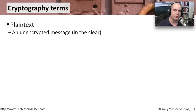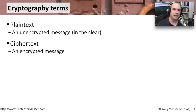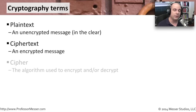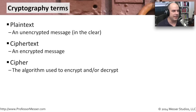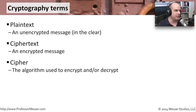Once we do encrypt the information, it becomes cipher text. We have taken our plain text, applied a cipher to it, and the resulting encrypted information is the cipher text. That cipher is what we're using to encrypt that message — it's an algorithm, a mathematical method that we use to take the plain text and convert it into something that people can't read.